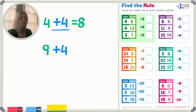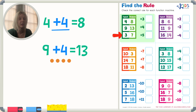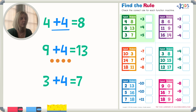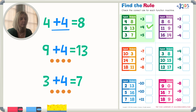9 plus 4 equals 13. Does that make sense? I'm going to count 4 up from 9 by drawing 4 dots: 9, 10, 11, 12, 13. Yes, that also works. And let's check the last row: 3 plus 4 equals 7. Counting up from 3: 4, 5, 6, 7. That's right. So plus 4 is my rule for this green function machine.